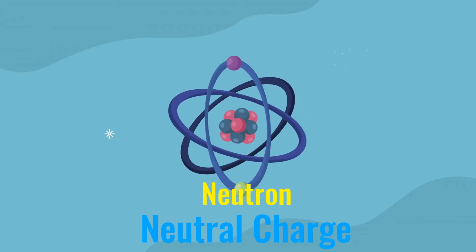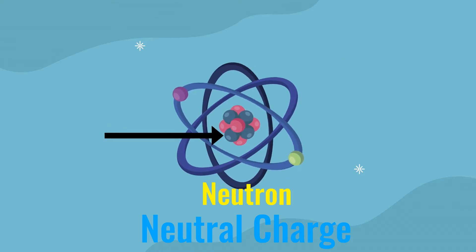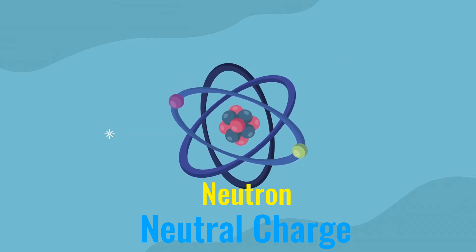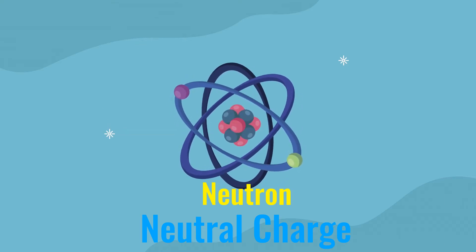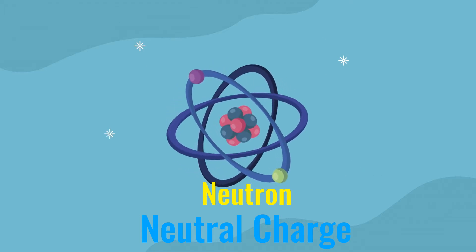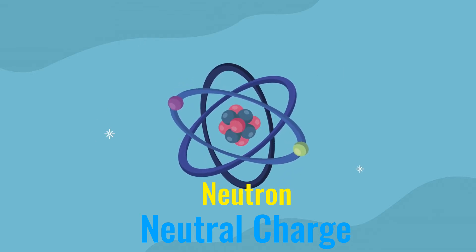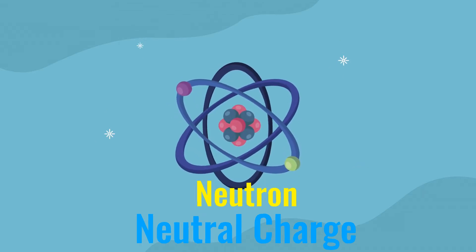Neutrons are the third subatomic particle. Neutrons also have a mass of one — they're roughly the same size as a proton. But they don't have a charge; they have a neutral charge. Neutron sounds like neutral, so you're going to remember neutrons have a neutral charge. They do not have an electric charge.